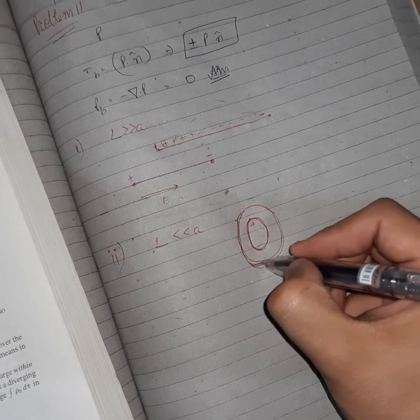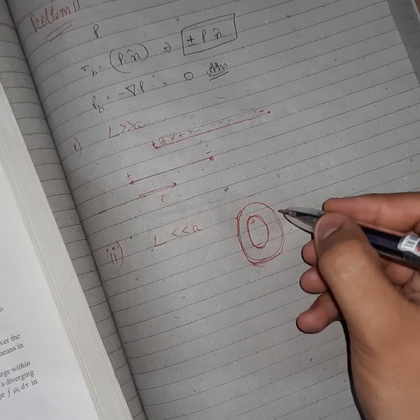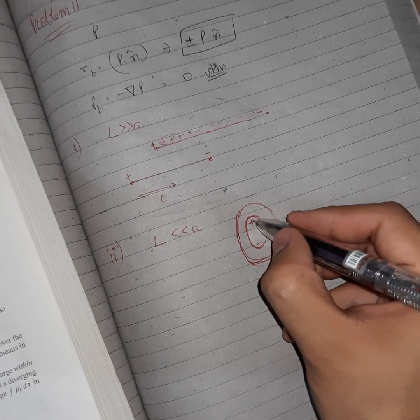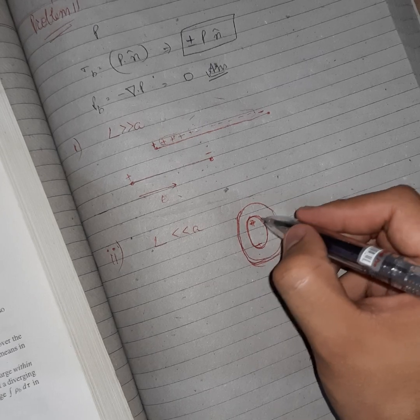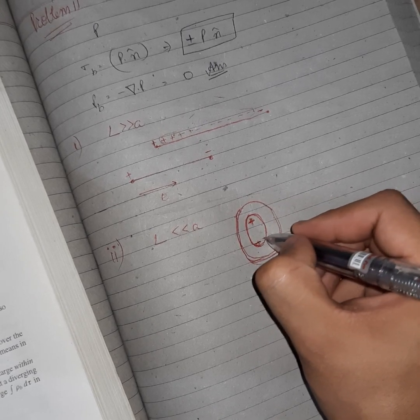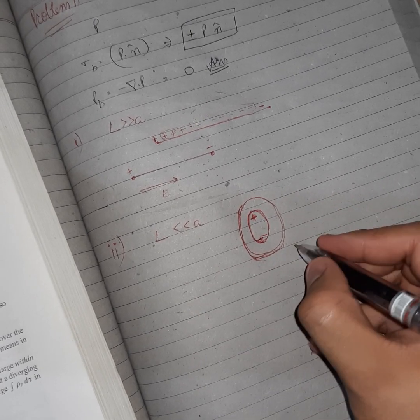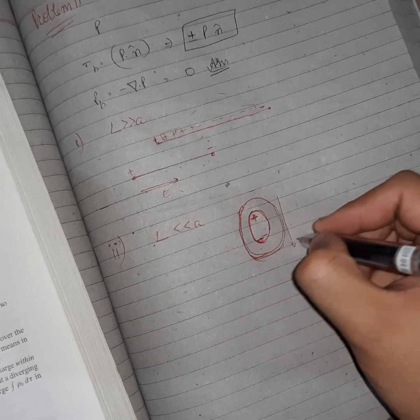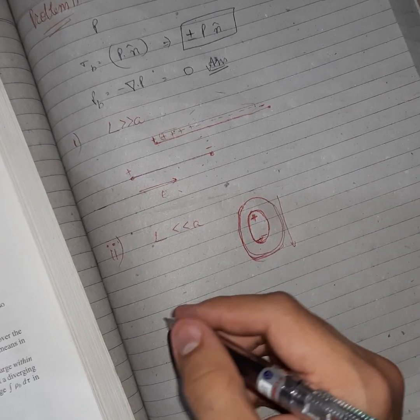And it will act like a capacitor now. You have seen that capacitor, so it will act like a capacitor. Now here will be positive and here will be negative. Electric field will be from this to this and then again from this to this.